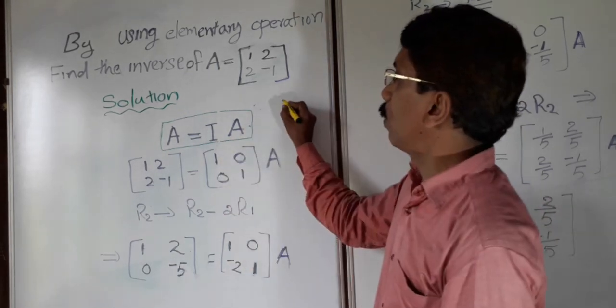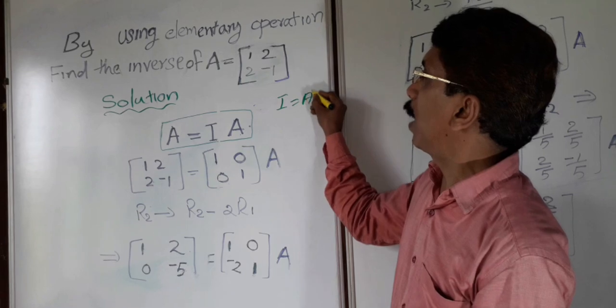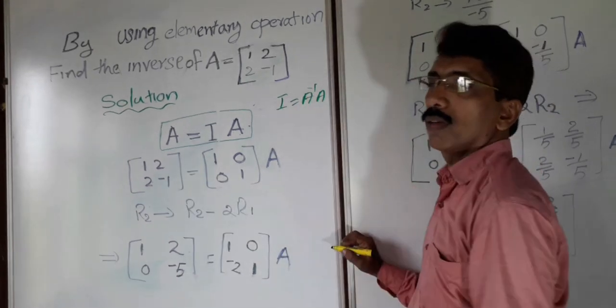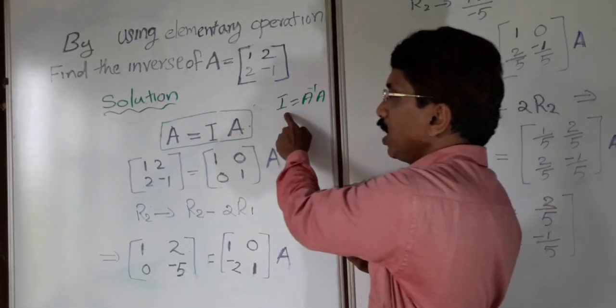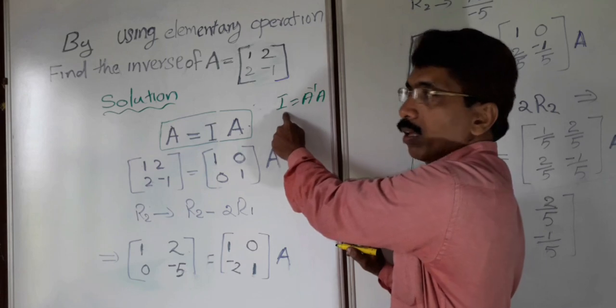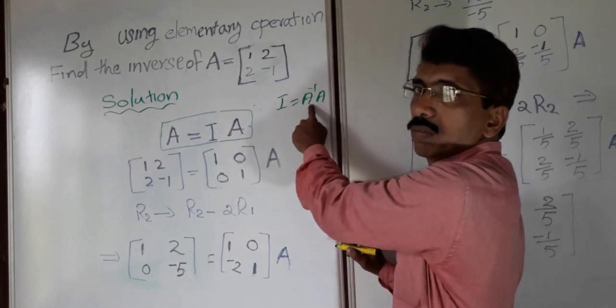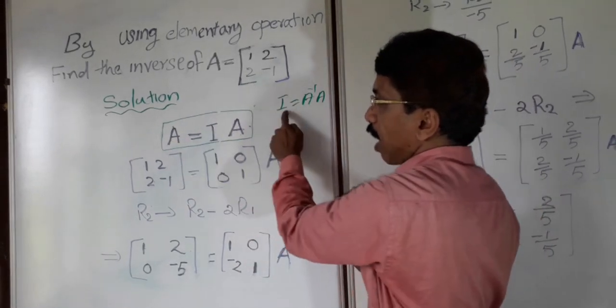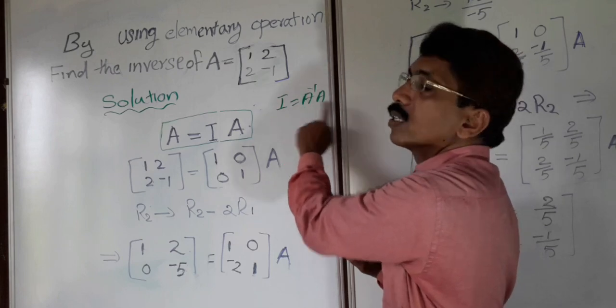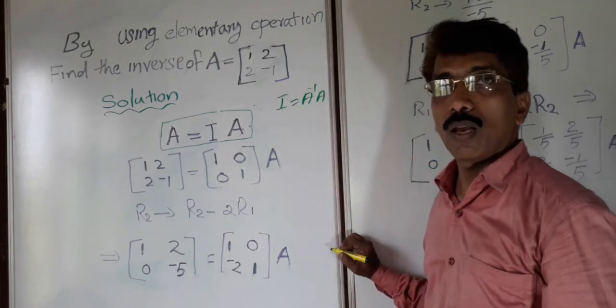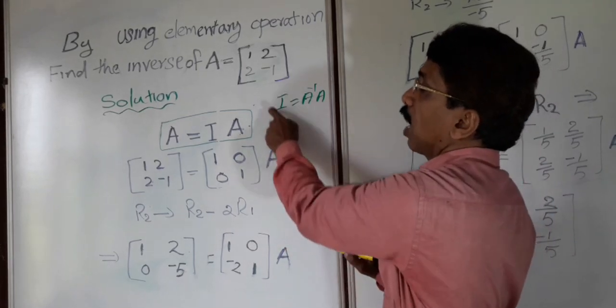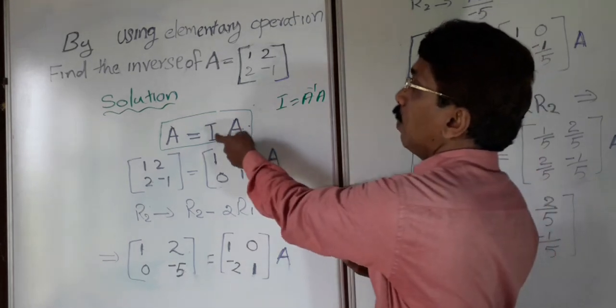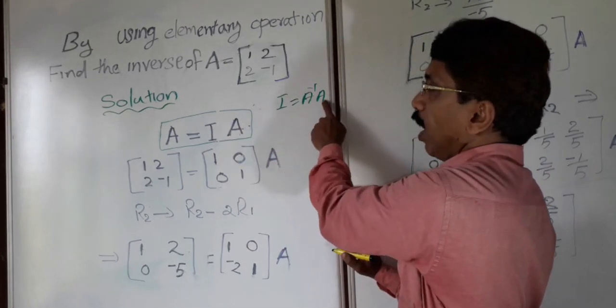Another thing you know: you will get I by multiplying A inverse and A. A and A inverse if you multiply gives I. We have written like this way, and we will reach like this way. You make A as I, so that here I will change to A inverse. For that, we use elementary operations. When you make A as I, automatically I will change to A inverse, because A inverse times A equals I.